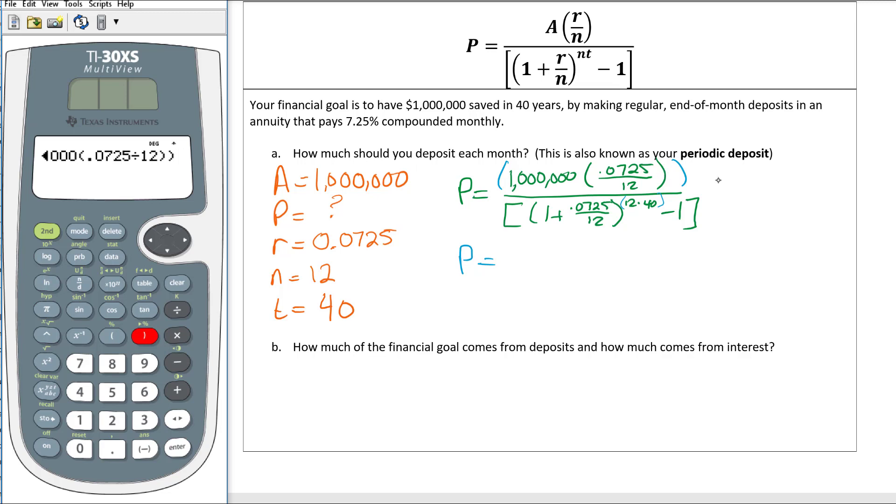Notice there's two back-to-back parentheses, divided by open two parentheses, 1 plus 0.0725 divided by 12, close that parentheses. We're raising it so use the little caret button, parentheses 12 times 40, close that parentheses, then minus 1, close that parentheses, hit enter.